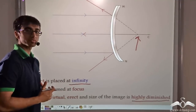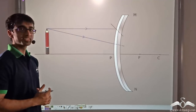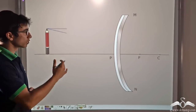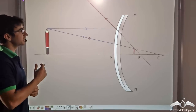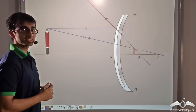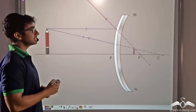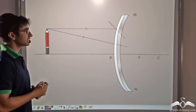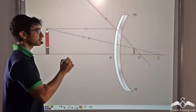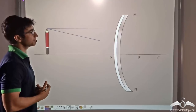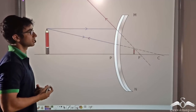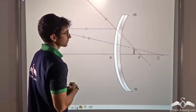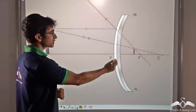Now what happens if we change the position of the pencil? The pencil is brought closer to the convex mirror and kept at a point between the pole of the convex mirror and infinity. Again we consider two rays. The first ray is parallel to the principal axis; after reflection, it seems to come from the focus behind the mirror. The second ray appears to pass through the center of curvature; after reflection, it passes back along its own path. When we extrapolate these two rays, they meet at a point behind the mirror — that is where the image of the pencil is formed.